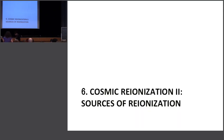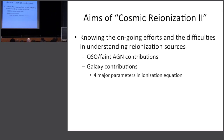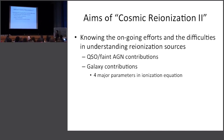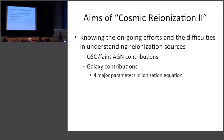All right, so let's get started. This is the Masami Ouchi Lecture No. 7, so two more lectures. This time I want to wrap up the Cosmic Reionization story. The aim of this session, Cosmic Reionization No. 2, is for you to know the ongoing efforts and the difficulties in understanding the reionization sources — AGN and galaxy contribution — and I want to highlight the four major parameters for understanding the reionization sources.